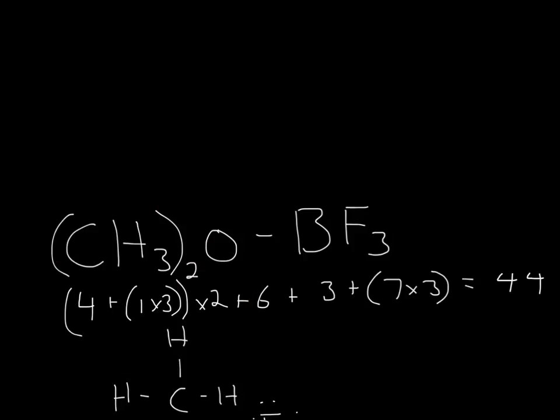And then oxygen will have 6, boron will have 3, and then fluorine has 7, but there's 3 of them, so it'll be 7 times 3. And you'll have a total of 44 valence electrons.